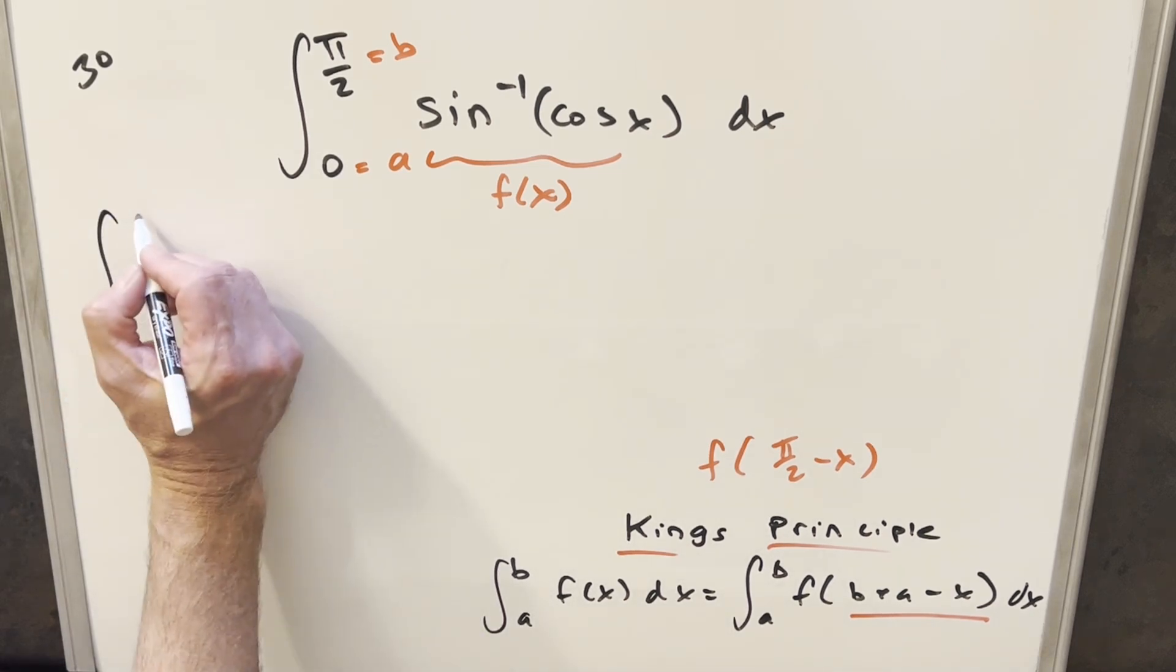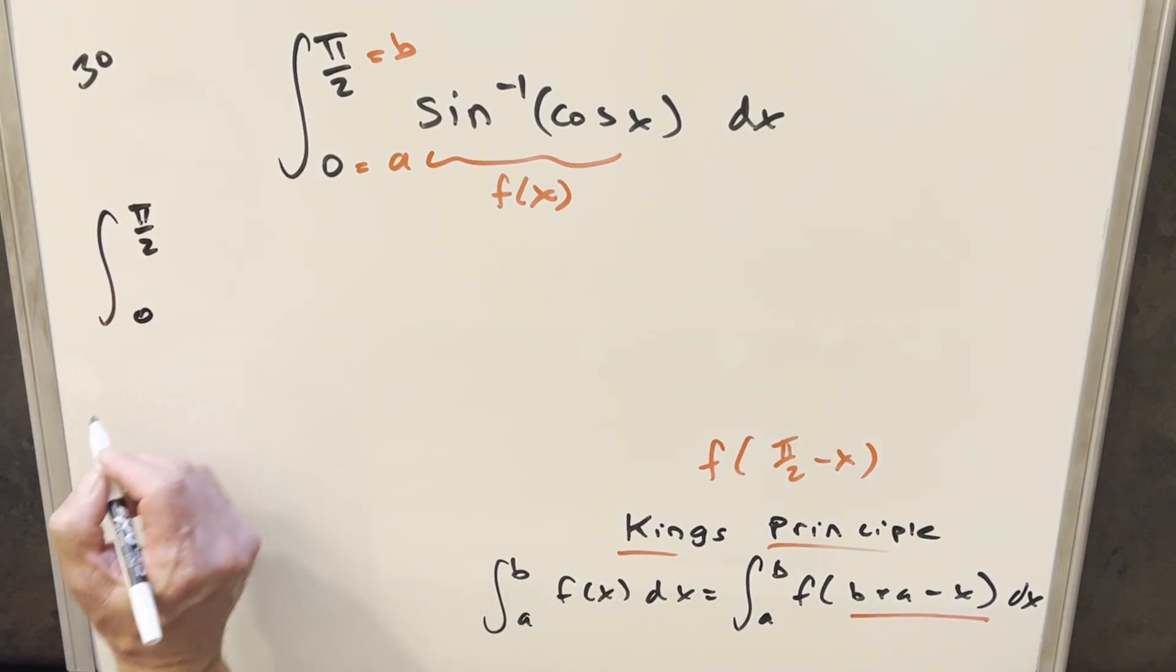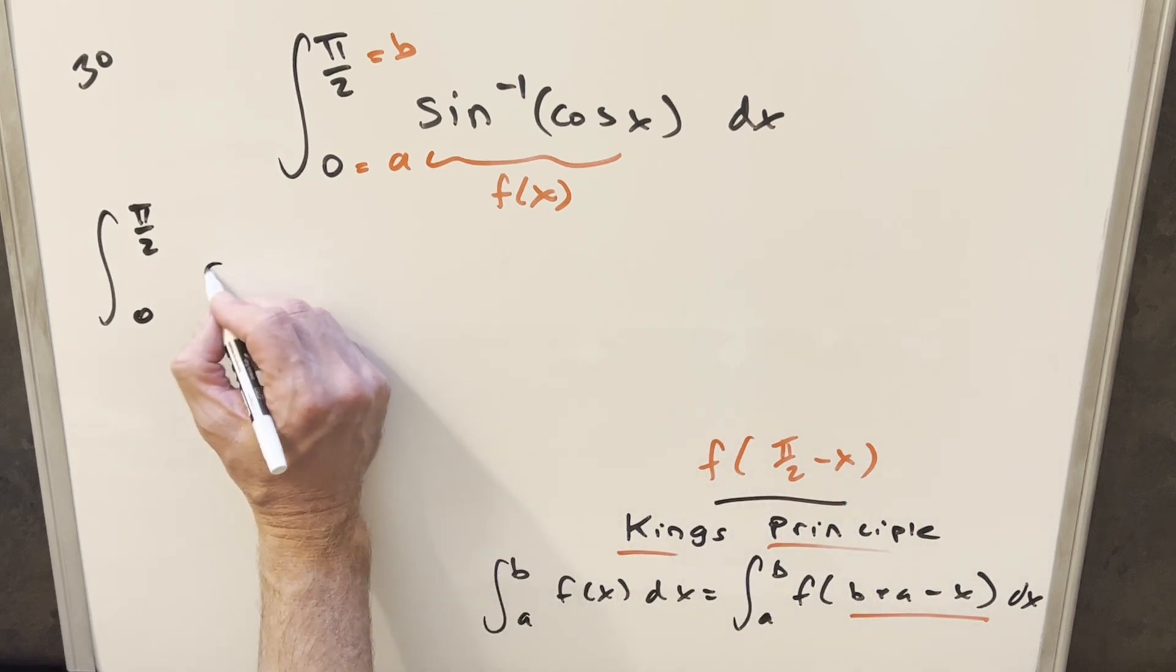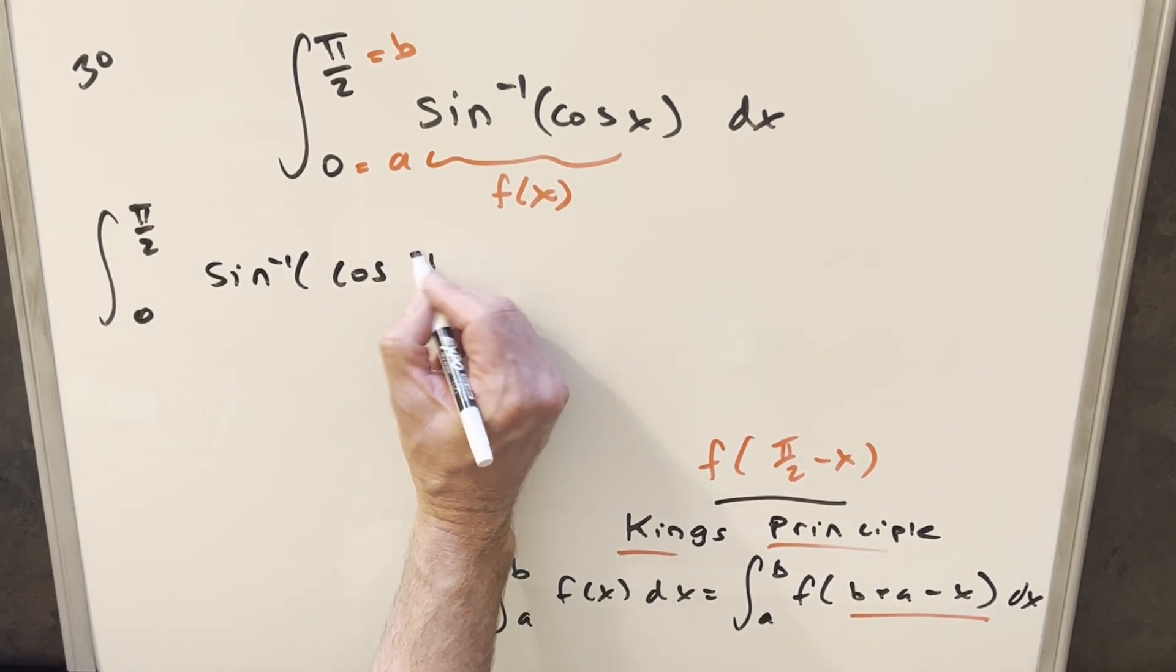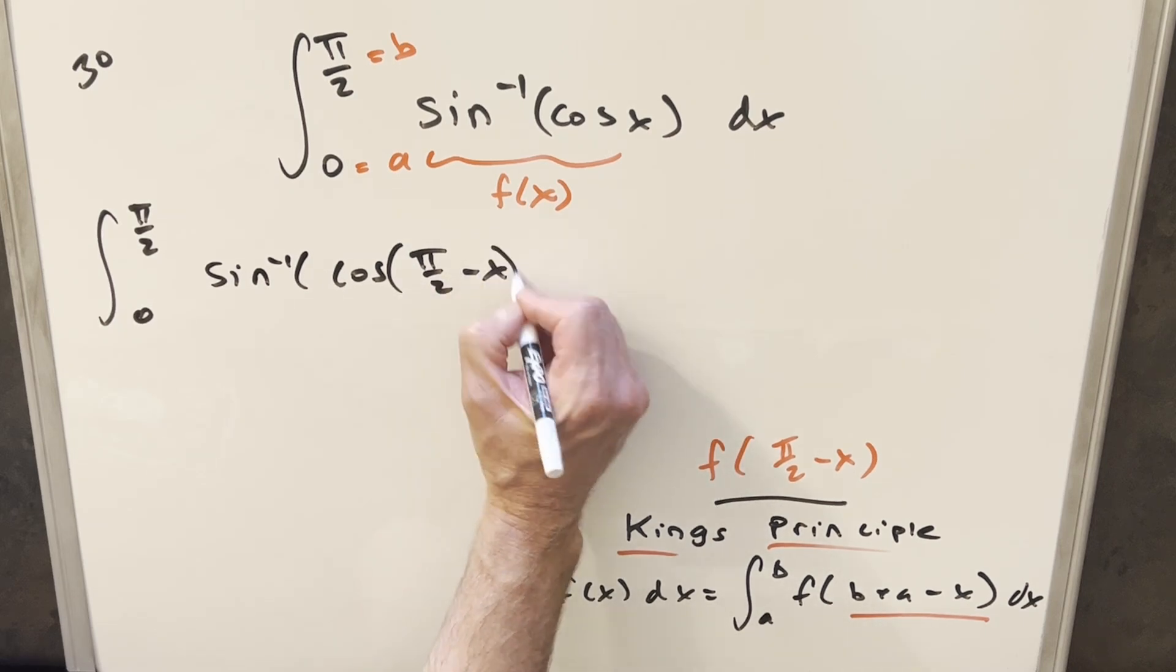So what's going to happen when you do that, bounds stay the same, 0 to pi over 2. We want to find this, so we're going to be looking for arcsine of just cosine pi over 2 minus x dx.